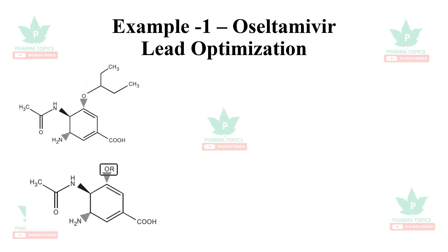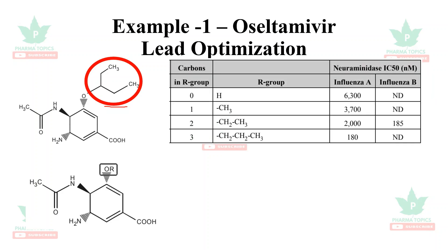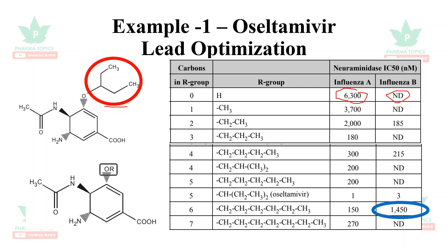Let us look at examples of lead optimization. The first example is oseltamivir. In the base structure, when R is substituted with –H, influenza A activity is very high but there is no influenza B activity. As chain length is increased to CH₃, then ethyl, then propyl (three carbons), activity decreases. However, when the chain length is extended to six carbons, influenza B activity increases. This shows that leads can be optimized for a specific biological activity depending on the need.